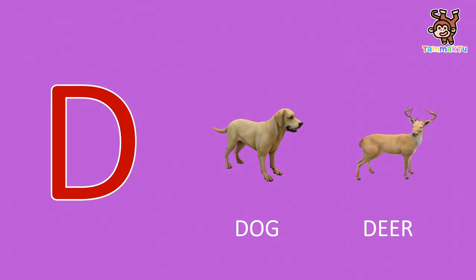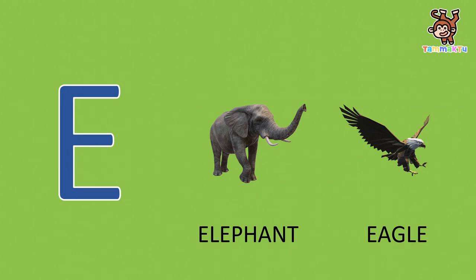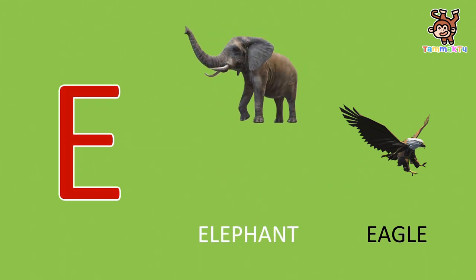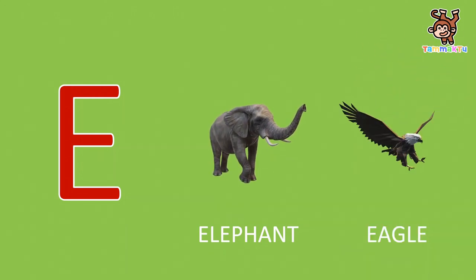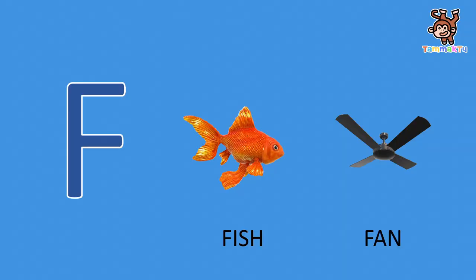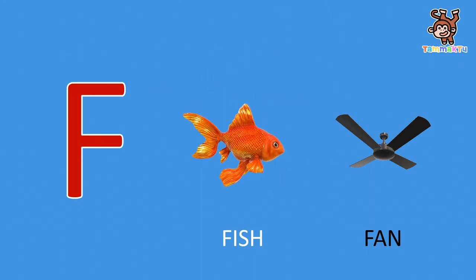E, E for elephant, Eagle. F, F for fish, Fan.